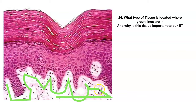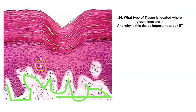Number twenty-four — what type of tissue is in this region where the green lines are? This is our epithelial tissue up here. Deep to all epithelial tissue is connective tissue. Why is this connective tissue important to epithelial tissue? One of the characteristics of epithelial tissue is it is avascular — there is no blood flowing through it. The connective tissue just deep to the epithelial tissue is very vascular, and it is the source of nutrients and oxygen that diffuse through the basement membrane into the epithelial tissue.